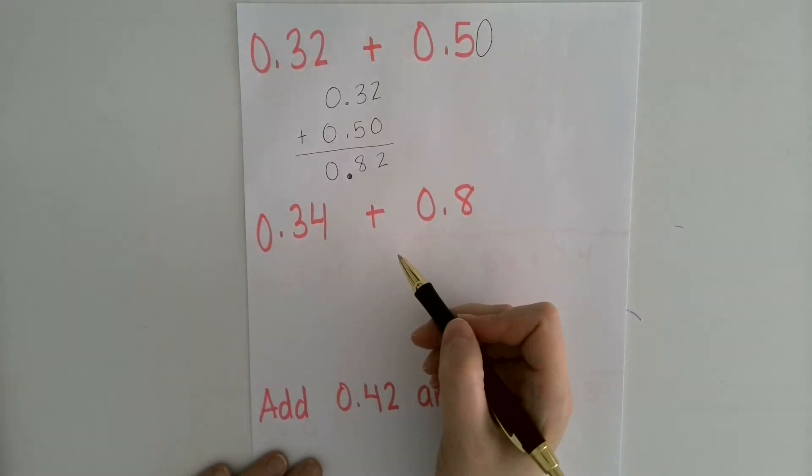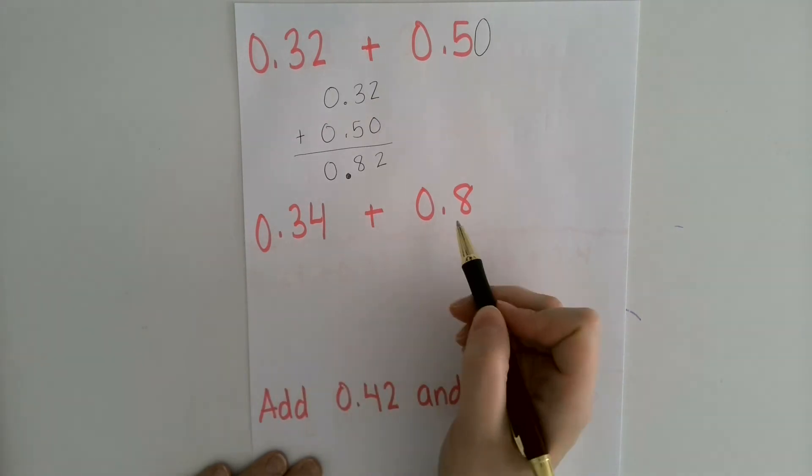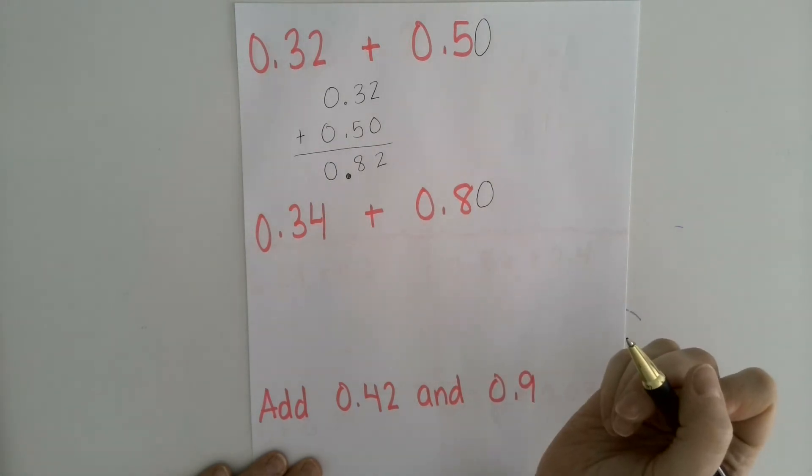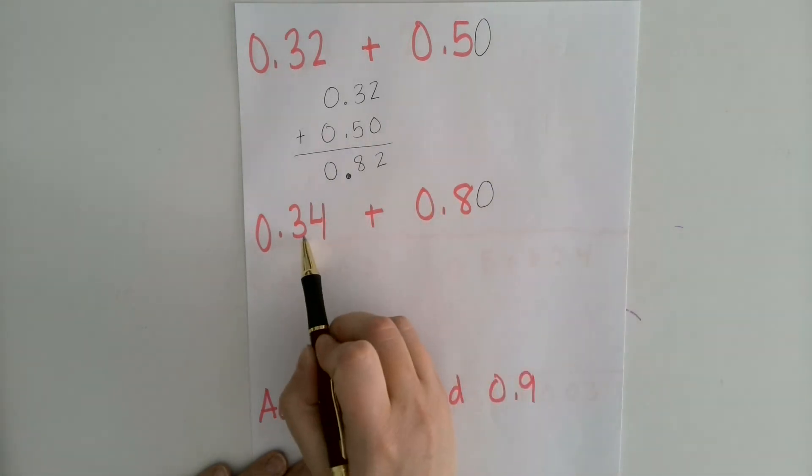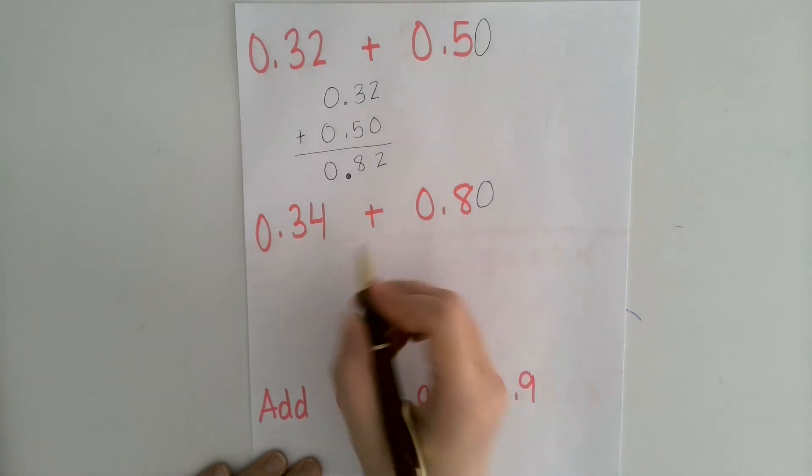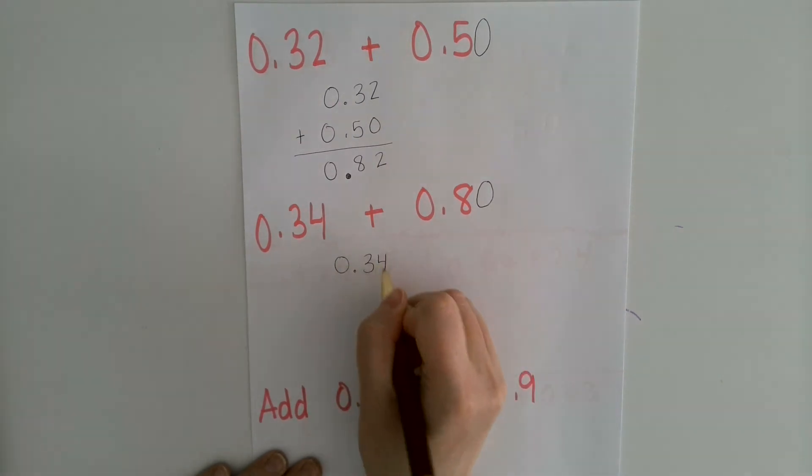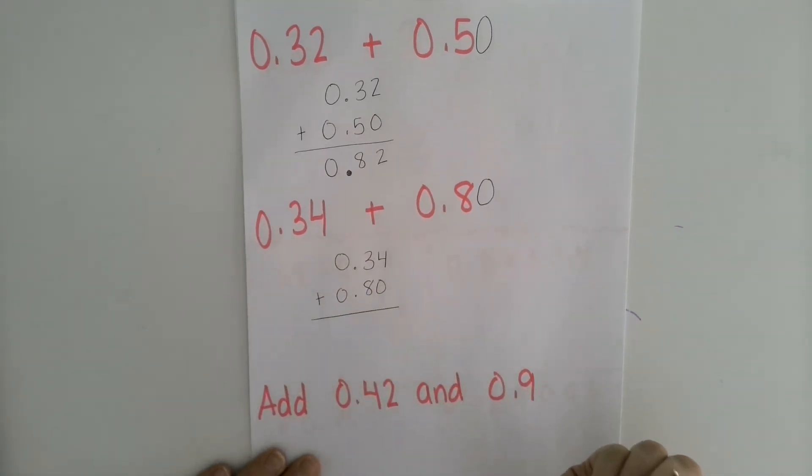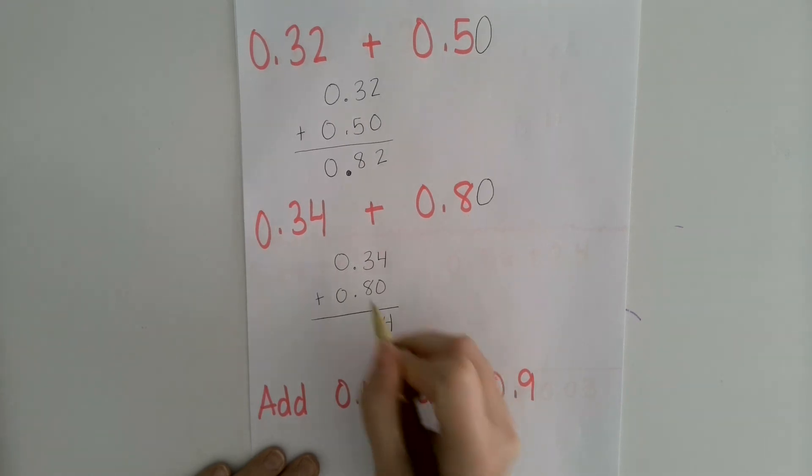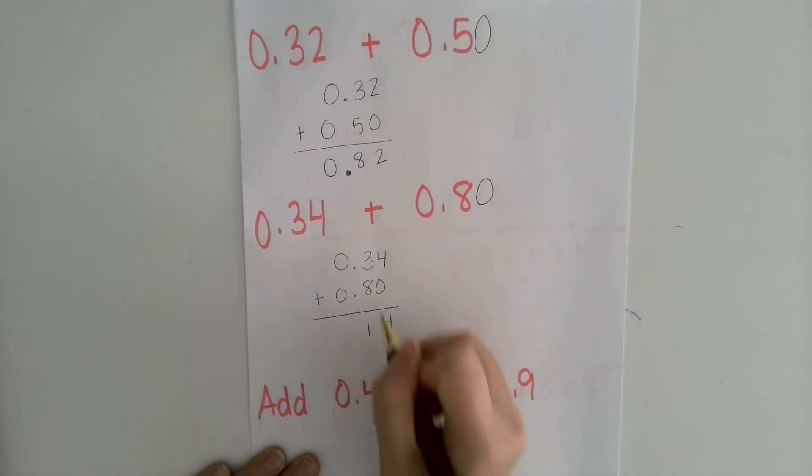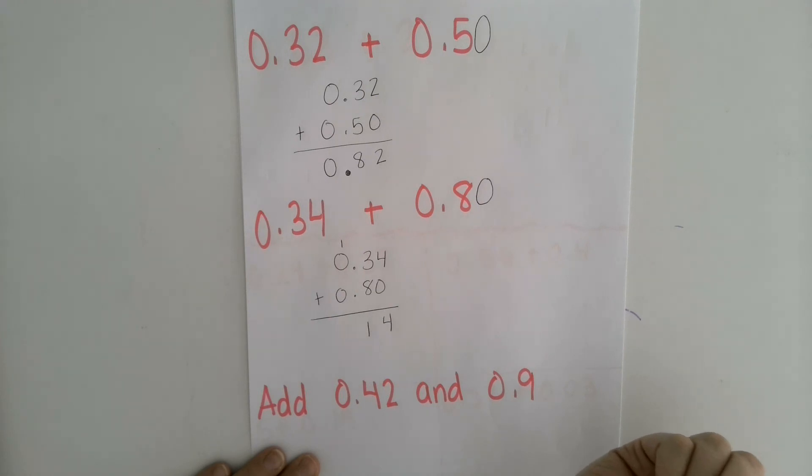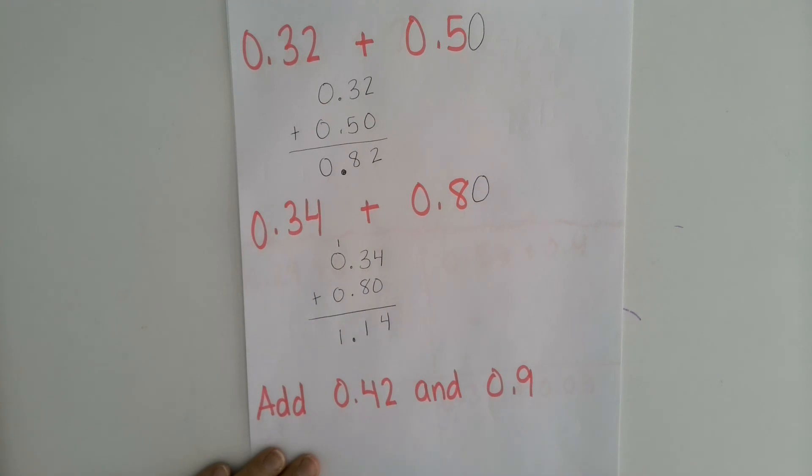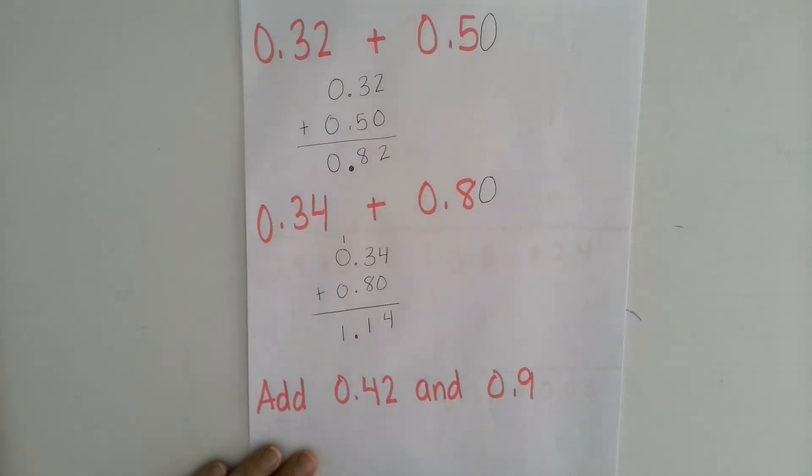Here I have a very similar problem. So 0.34 plus 0.8. I want to add a 0 here to make this 80 hundredths instead of 8 tenths because I want to have the same number of places past the decimal point. Okay, so 4 plus 0 is 4. But 3 plus 8 is 11. So I'm going to have 1 here and then I'm going to bring that other one over. 1 plus 0 plus 0 is 1. And then I just want to bring that decimal point straight down. So I end up with 1.14.